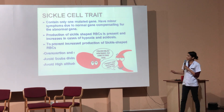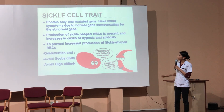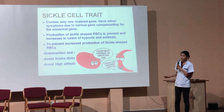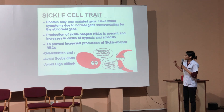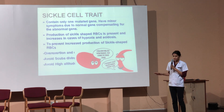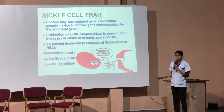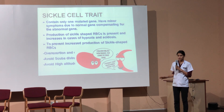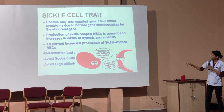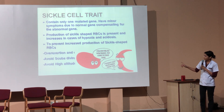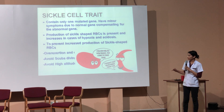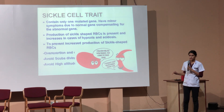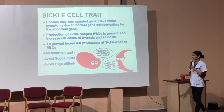In the sickle cell trait, only one of the genes is mutated, and there are only minor symptoms present due to the normal gene which compensates for the abnormally produced RBCs. Production of sickle cell RBCs in these cases occurs due to low oxygen tension as well as dehydration. To prevent sickle cell RBC production, the patient must avoid overexerting themselves, dehydrating themselves, and avoid scuba diving as well as high altitude.